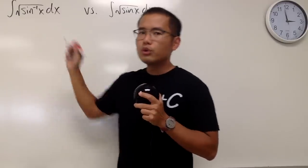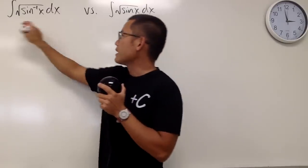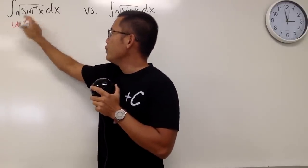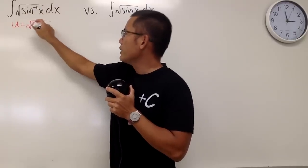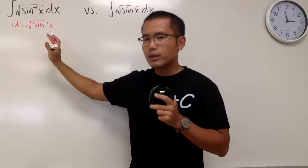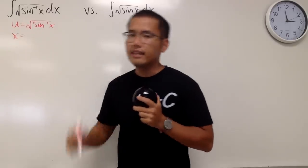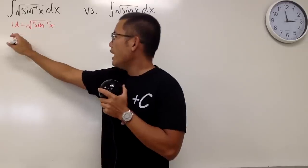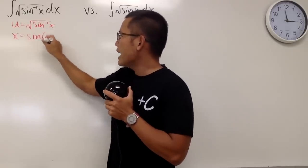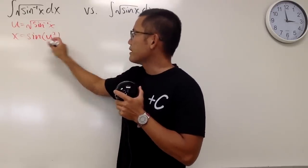For the integral of square root of inverse sin x, let's begin by a classic u substitution, that u equals square root of inverse sin x like this. I want to isolate the x right here, so we will square both sides and then take the original sine on both sides, and we get x equals the original sine of u squared like this.